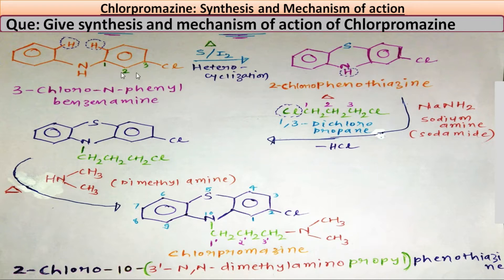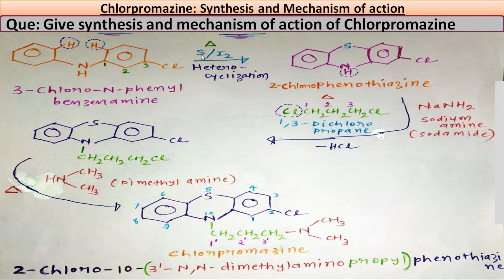First we will discuss synthesis of chlorpromazine. The starting material is 3-chloro-N-phenyl-benzenamine. This portion is aniline; the IUPAC name of aniline is benzenamine. Here, chloro is present on the third position, so it is 3-chloro, and at the amino nitrogen a phenyl is present, so N-phenyl benzenamine. This is the IUPAC name of this compound.